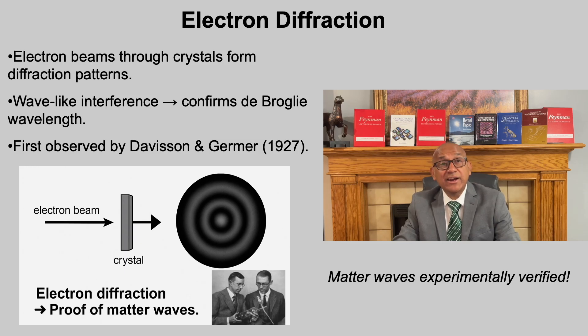Yes, in 1927, Davisson and Germer directed a beam of electrons at a crystal and saw diffraction patterns, just like X-rays or light waves. This was the experimental proof that electrons, which we normally think of as particles, behave like waves at small scales. The observed diffraction angles matched perfectly with De Broglie's wavelength formula, lambda equal to h by p. Electron diffraction confirmed that matter waves are real, turning De Broglie's hypothesis into a cornerstone of quantum mechanics.